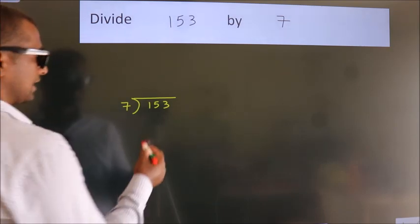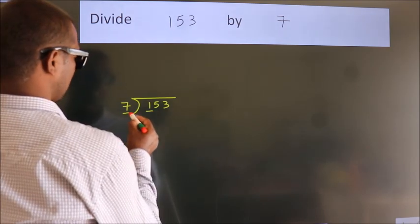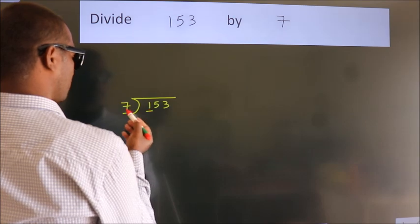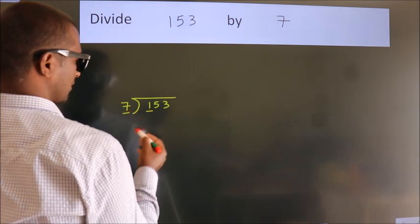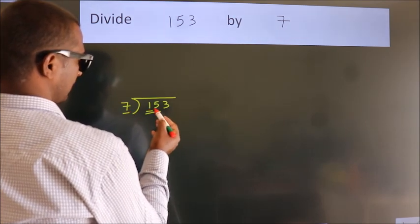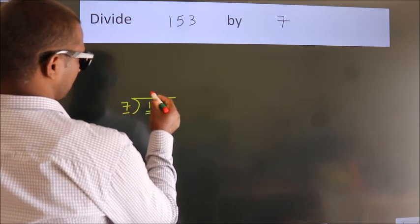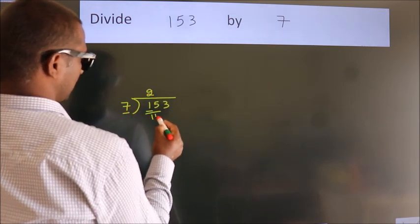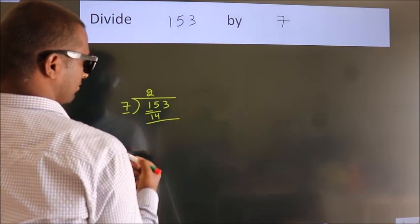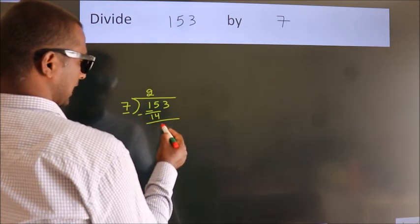Next. Here we have 1. Here 7. 1 is smaller than 7, so we should take two numbers. 15. A number close to 15 in the 7 table is 7 twos, 14. Now we should subtract. We get 1.